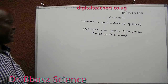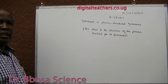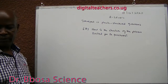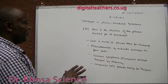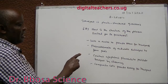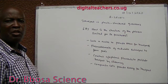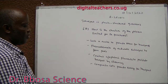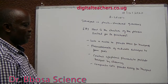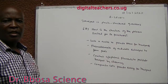Number six A: how is the structure of the phloem suited for its function? Adaptations of phloem: lack of nucleus to provide room for transport; plasma membrane of end wall enlarged to form pores to reduce resistance to flow; contain cytoplasmic filaments to facilitate transport by streaming; companion cells provide energy for transport.